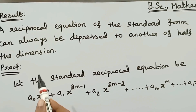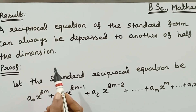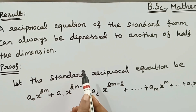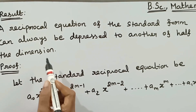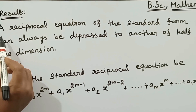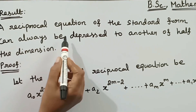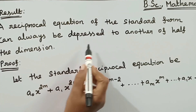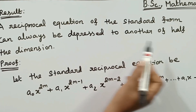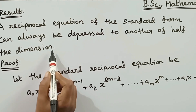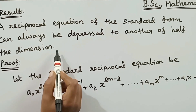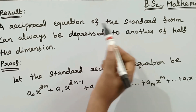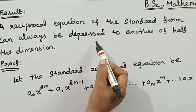Good morning students. Classical algebra: the standard form of a reciprocal equation was discussed in the previous video. Based on that result, in this video we will show that a reciprocal equation of standard form can always be depressed to another equation of half the dimension. If the standard form of a reciprocal equation is given, it will be depressed to another equation of half its degree.